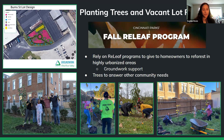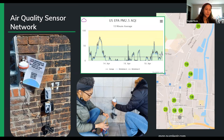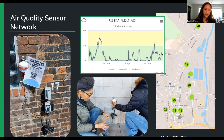Trees can answer other community needs. For example, if food access is an issue, we can plant fruit trees as a small part to help fix that problem. Another thing we are doing in Lower Price Hill that we're hoping to grow across the city is implementing an air quality sensor network. Folks in Lower Price Hill have been concerned about air quality for a very long time, so we've been working to install purple air monitors across the neighborhood to get a better sense of how air quality is affecting the neighborhood and identify areas for targeted mitigation. That's a live map you can see at purpleair.com.